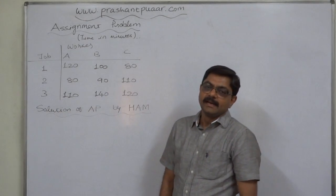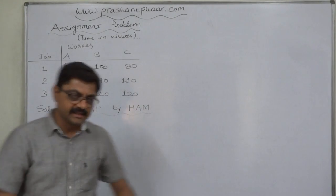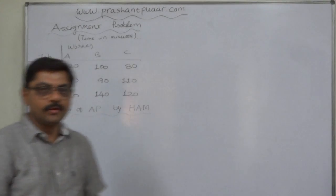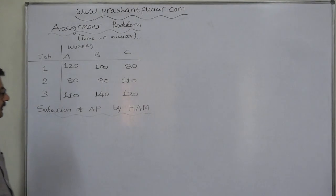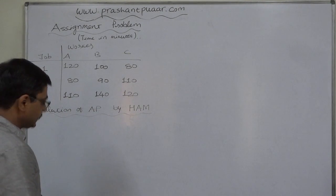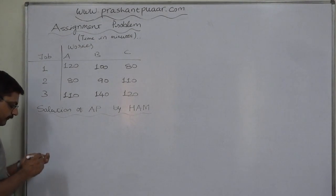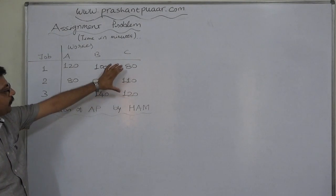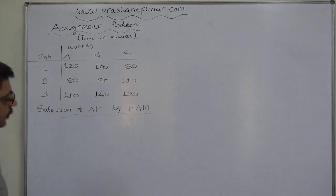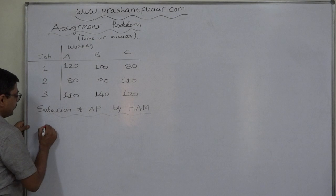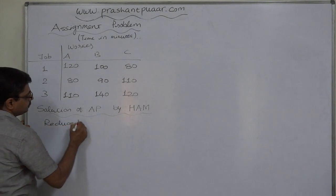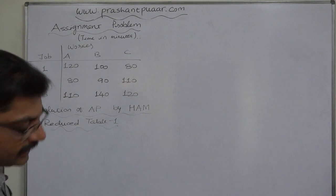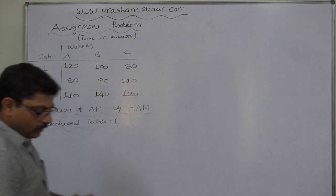Hello friends, welcome. Let us solve an assignment problem through the Hungarian Assignment Method, or HAM. It is a very unique method of solving assignment problems using simple arithmetic functions. The first step is to subtract the lowest value of each row from all the values of that row — this is known as reducing the table. Let us prepare reduced table 1.